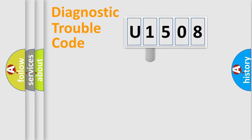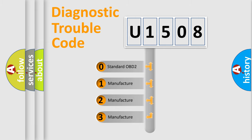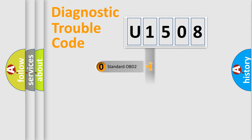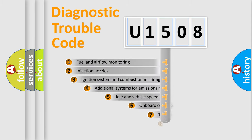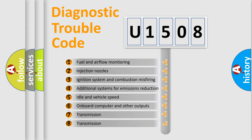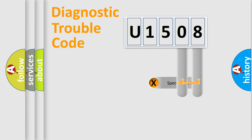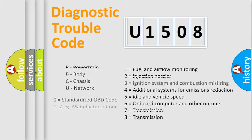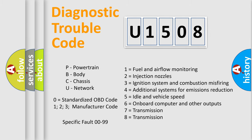This distribution is defined in the first character of the code. If the second character is expressed as zero, it is a standardized error. In the case of numbers 1, 2, or 3, it is a more manufacturer-specific expression of the error. The third character specifies a subset of errors. The distribution shown is valid only for the standardized DTC code, and only the last two characters define the specific fault of the group.